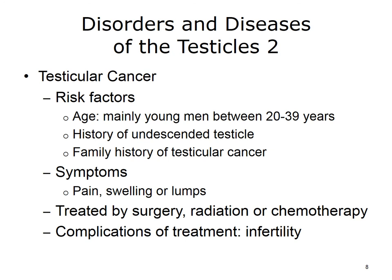And finally, testicular cancer can form in a man's testicles. This type of cancer mainly affects young men between the ages of 20 and 39. It is also more common in men who have had abnormal testicle development, an undescended testicle, or a family history of the cancer. Symptoms include pain, swelling, or lumps in the testicles or groin area. Diagnostic tests used to confirm the diagnosis include an open biopsy or a needle biopsy. Treatment options include surgery, radiation, and/or chemotherapy, and treatments may also cause infertility.